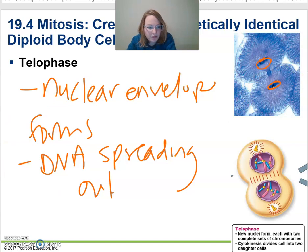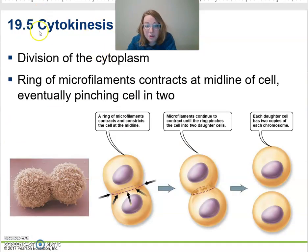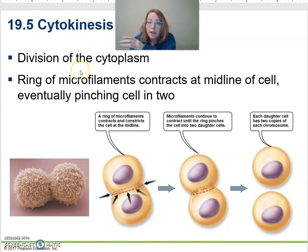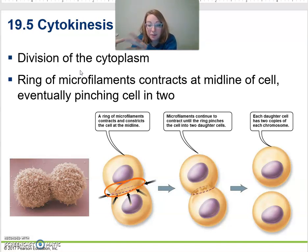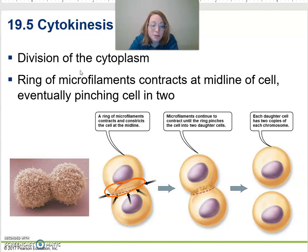The other part we haven't spoken about too much is cytokinesis — the division of the cytoplasm and all the organelles. The spindle fibers wrap around and squeeze, forming cleavage furrows, and eventually they'll separate everything. The book says this starts in telophase, but it can also start at the end of anaphase.